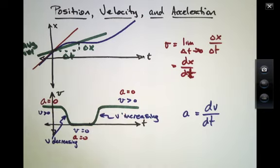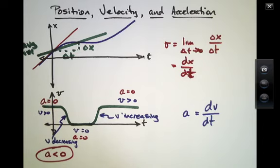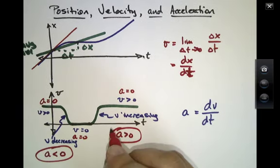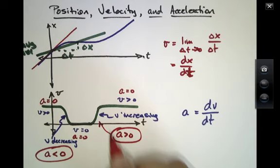It's only in two regions where the velocity is changing that the acceleration is different from 0. And so, if you look at that graph again, in this region, since velocity is decreasing, that represents an area where the acceleration is less than 0. In this region, since the velocity is increasing, that represents an area where the acceleration is greater than 0.